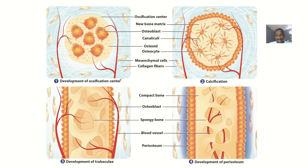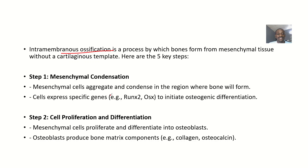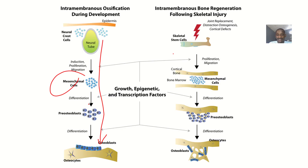Step one is mesenchymal condensation. Mesenchymal cells aggregate and condense in the region where the bone will be formed. These cells express specific genes like Runx2 to initiate osteogenic differentiation. Essentially, mesenchymal cells accumulate at the site where the bone is supposed to form.